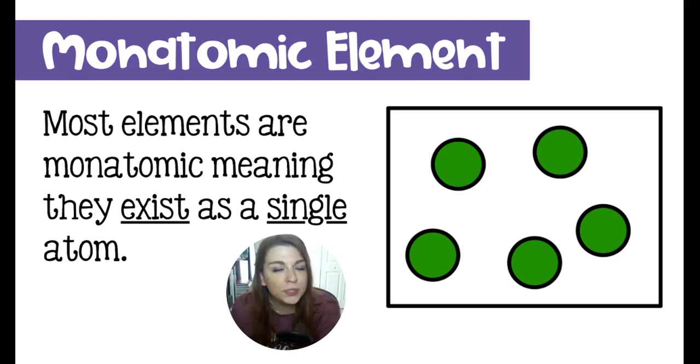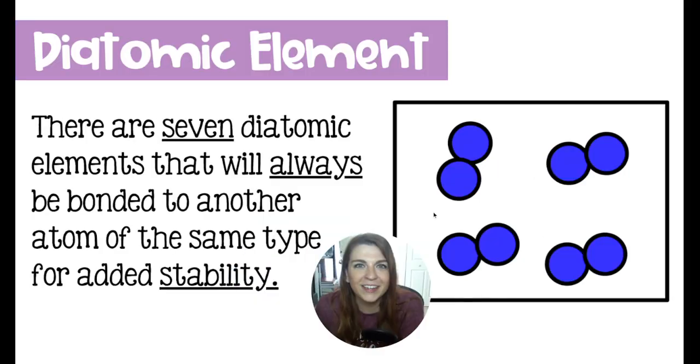There are two types of elements. The first are monatomic elements, which are most of the elements on the periodic table. This means that when you find them in nature, not that we could see them, but they do exist as single atoms. So this could be gold. This could be helium. This could be calcium. Those atoms will go off on their own individually and go find other atoms to bond with.